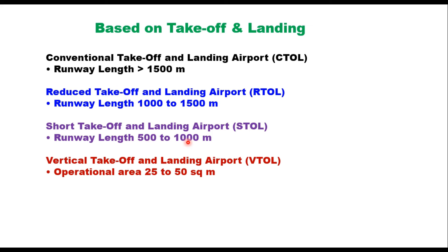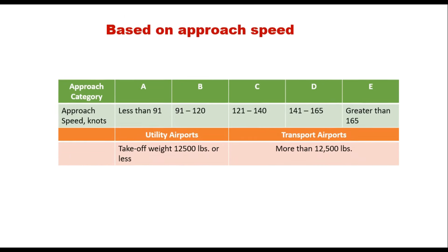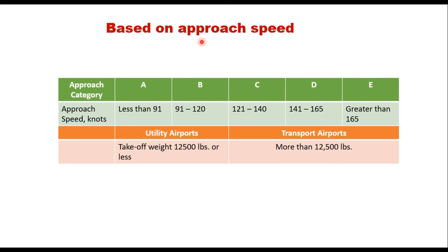There is a class of aircraft like military aircraft which can take off in a very short runway length, and these airports are termed as Short Takeoff and Landing airports, or STOL. Some classes of aircraft like helicopters can take off and land vertically, requiring a very small area of about 25 to 50 square meters. These airports are called Vertical Takeoff and Landing airports, or VTOL.